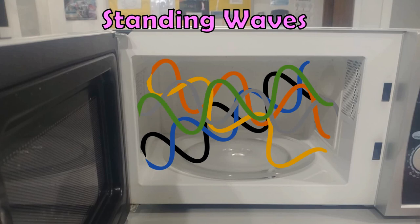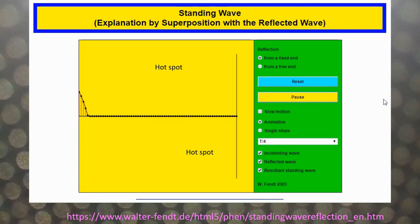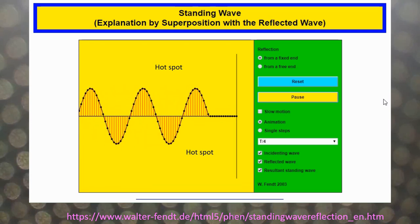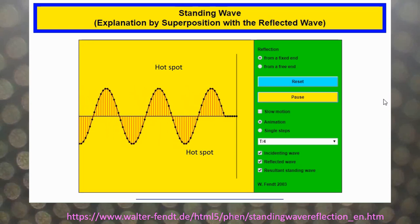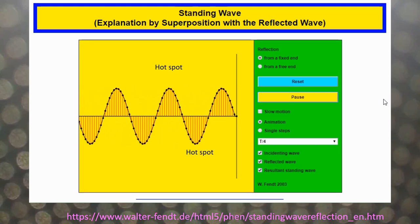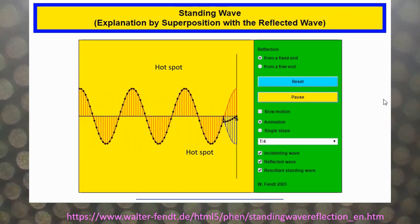You get a fixed pattern of hot spots and cold spots, antinodes and nodes. In this animation here from Walter Fendt, it's an amazing animation, go to the website and have a play with it. You see an incident wave coming towards a boundary. That incident wave is going to reflect off the boundary, have a change of phase, and then the reflected wave is going to interfere with the incoming wave.